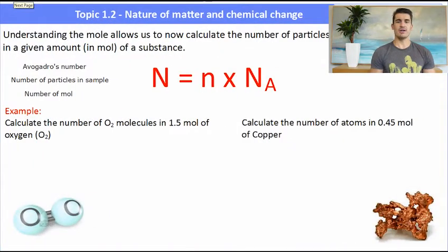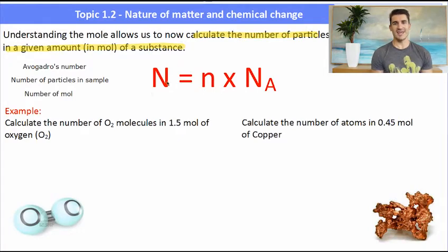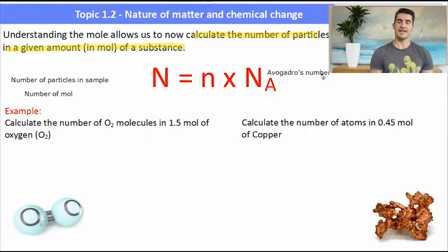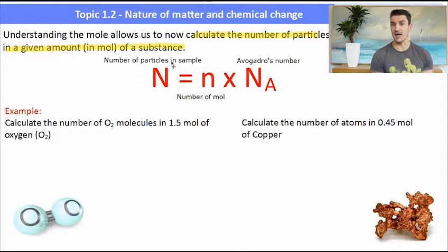Understanding the mole allows us to calculate the number of particles in a given amount of substance — and 'a given amount' means mole. So we have this formula: N equals n times Nₐ. Nₐ or L is Avogadro's number. Little n is the number of moles. Big N is the number of particles — think of that as a counting number, how many do we have.